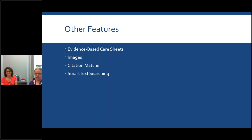Another tool is the citation matcher. If you've heard of a great journal article and want to see if it's indexed in CINAHL, use the citation matcher tool. You input as many details about the article as you know — maybe the author and title — and it'll try to pull up that exact article for you. Similar to features in other databases like PubMed, you just use a single form and it'll try to locate the article, so you don't have to remember the formatting for searching by individual fields.